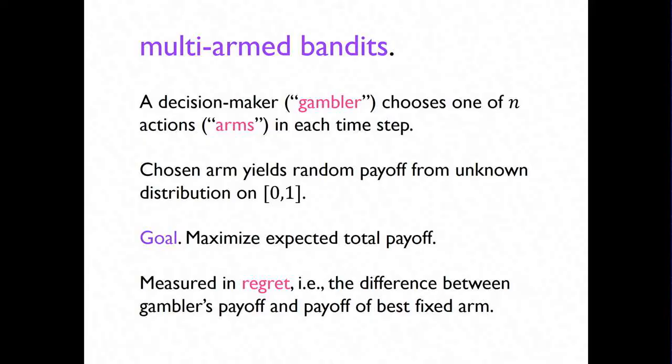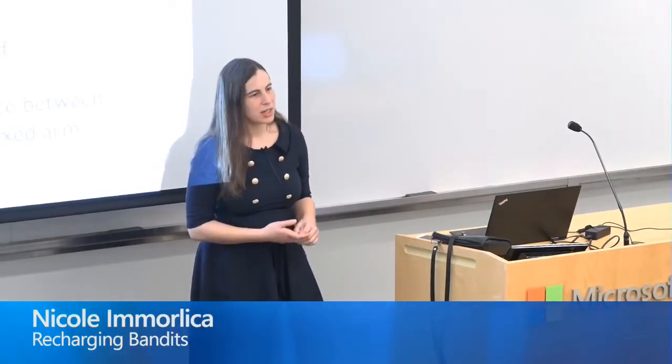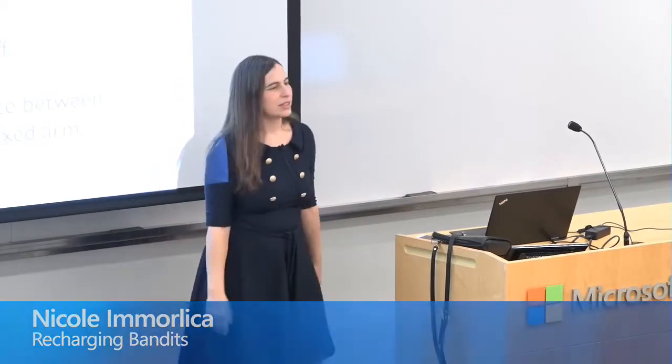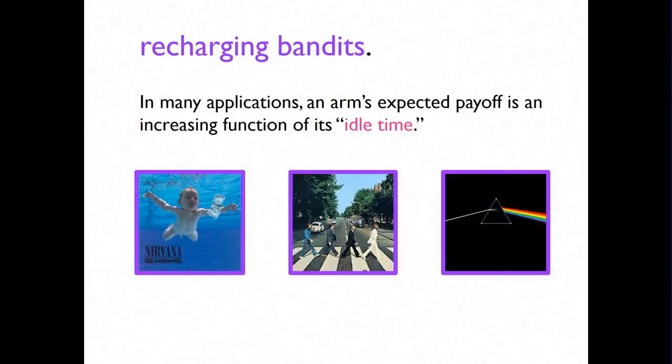I think we all in here know what the multi-arm bandit setup is. You have a bunch of arms. Each arm has a reward that you get when you choose to pull it, and the reward is drawn from some unknown distribution. Your goal is to play around with the arms a bit until you get a lot of rewards. The thing about the standard setup is that the distribution of the reward of an arm is fixed over time. But in many settings of interest, the distribution is not fixed but rather is a function of the idle time since you last pulled the arm.